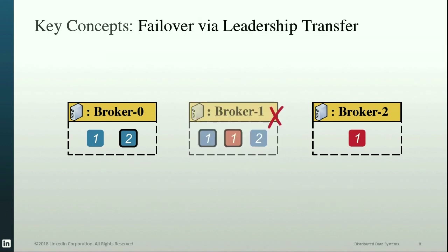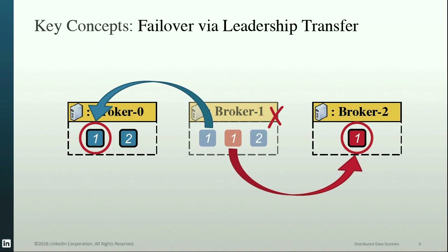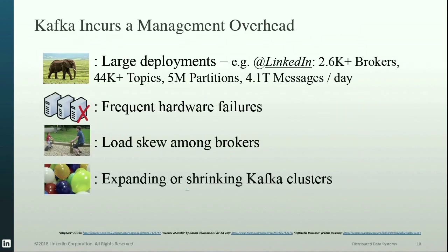The followers come into play when there are leader failures. If a broker dies, then clients would be unable to produce to or consume from the partitions whose leaders reside on the failed broker. In such cases, Kafka automatically transfers the leadership of failed leaders to their corresponding online or healthy followers on the other brokers. So now we know how Kafka works — let's see why there is a need for managing it.